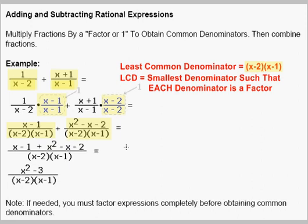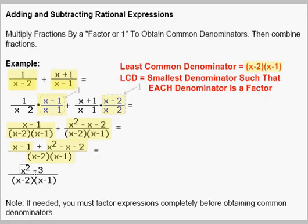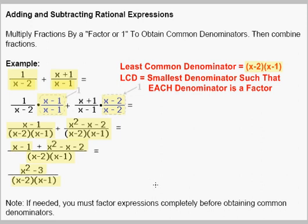Now we have two fractions with common denominators. We combine them by adding their numerators: x minus 1 plus x squared minus x minus 2, all over our common denominator. The numerator simplifies to x squared minus 3, over our common denominator of x minus 2 times x minus 1. Note: if your rational expressions need to be factored, you should do so before even starting to find the least common denominator. In this case, there was no factoring that needed to be done.